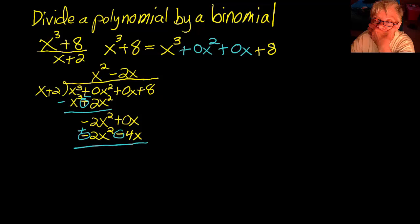That's what we do when we subtract a polynomial. Negative 2x squared plus 2x squared is 0, and 0x plus 4x equals 4x. Bring down the plus 8.